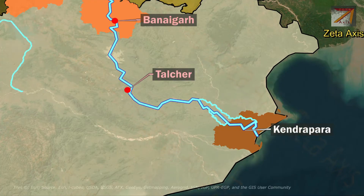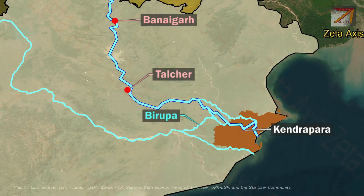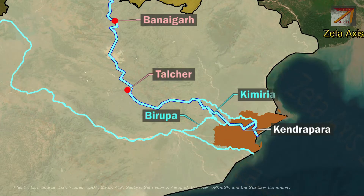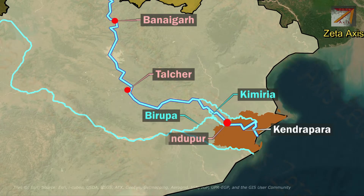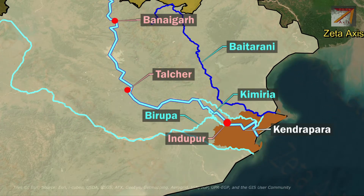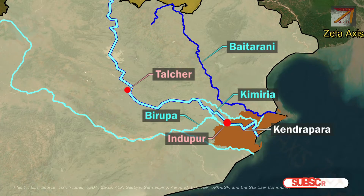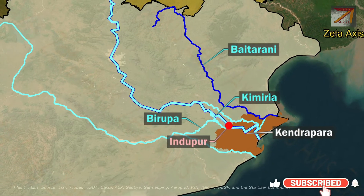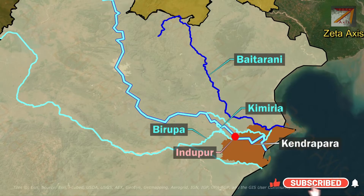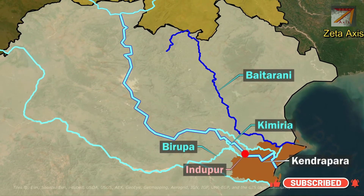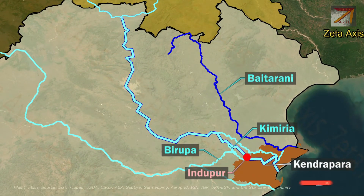A distributary of the Mahanadi river called the Birupa river flows into Brahmani's distributary called Kimiria. The Kimiria then rejoins the Brahmani river at Indupur. A distributary of the Brahmani river also joins the Baitarani river. The Brahmani river flows into the Bay of Bengal in Kendrapara and forms a huge delta along with Mahanadi and Baitarani.